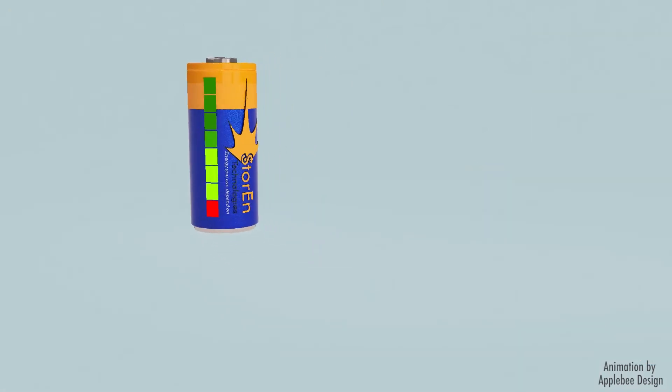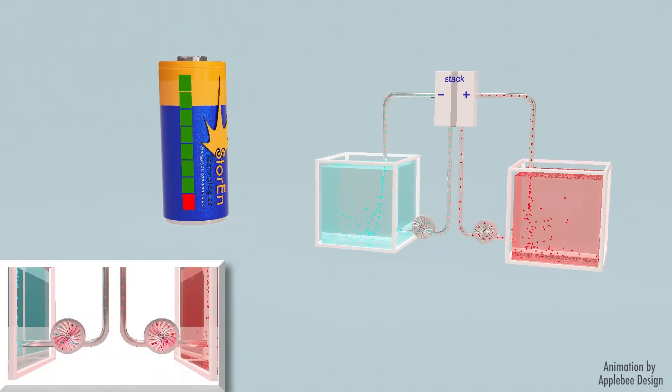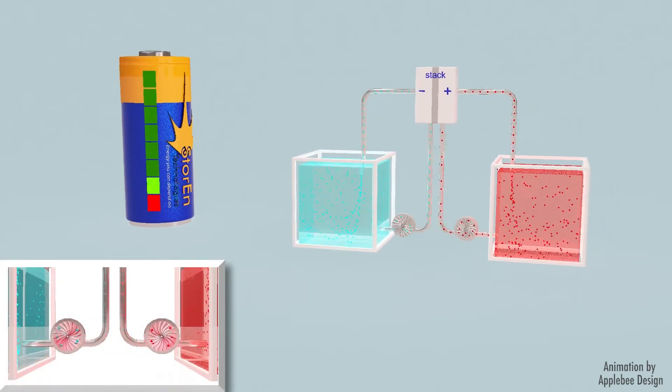While the battery is discharging and providing power, the positive electrolytes are reduced, thus releasing one electron. This way, the negative electrolytes oxidize.